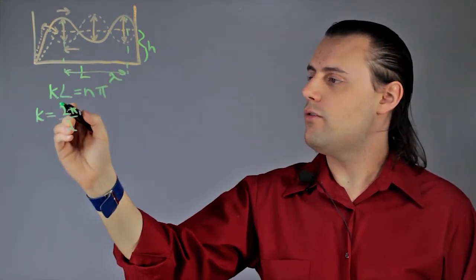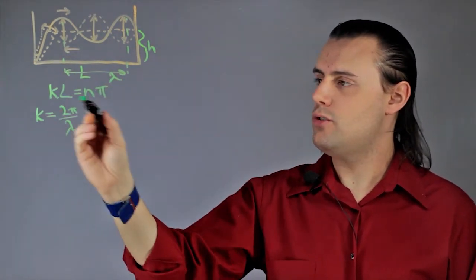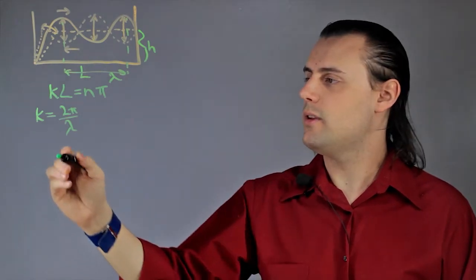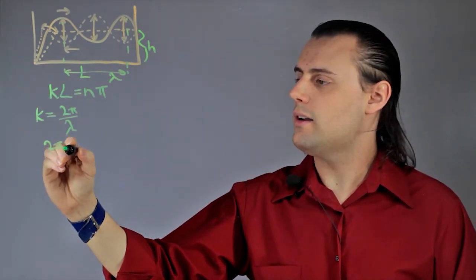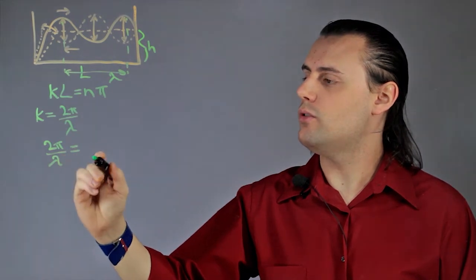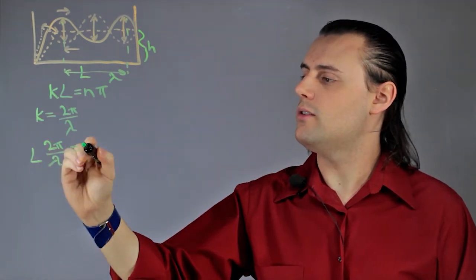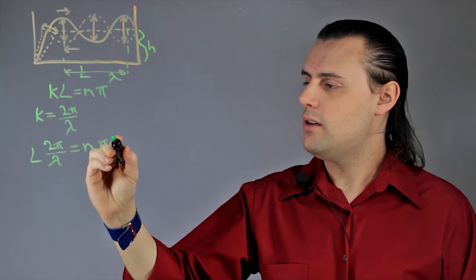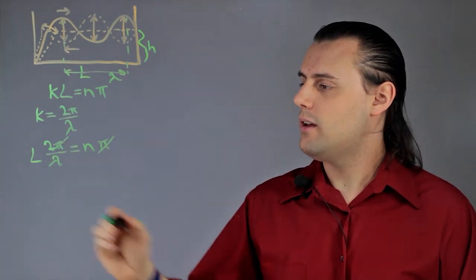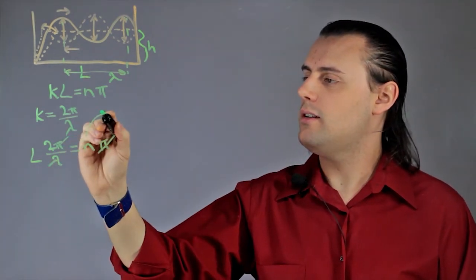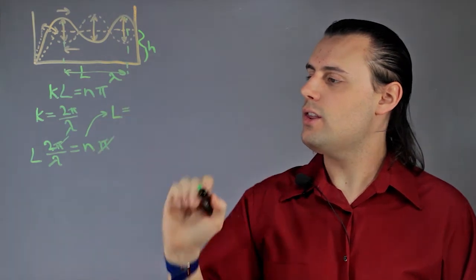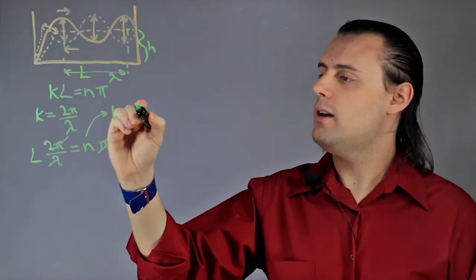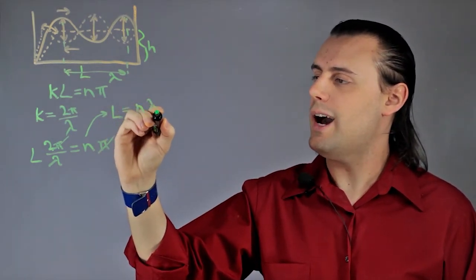So if we put this definition into our resonance condition equation, we get 2π over λ times l is equal to nπ. The π's cancel out, and we see that the length has to be equal to an integer multiple of half wavelengths.